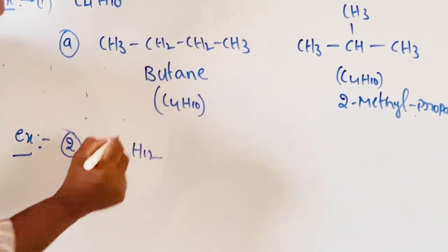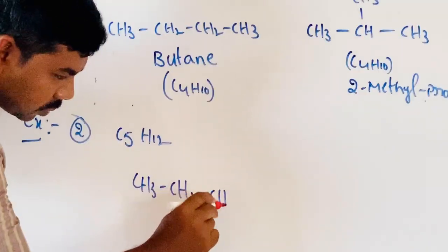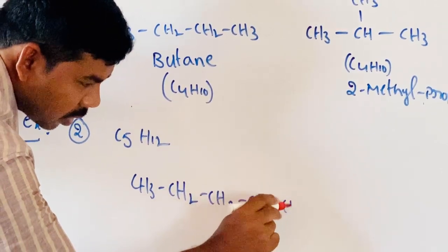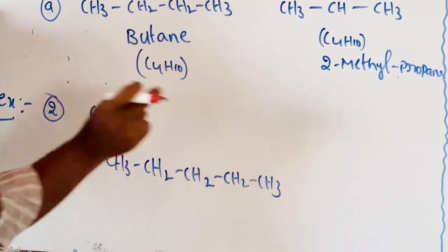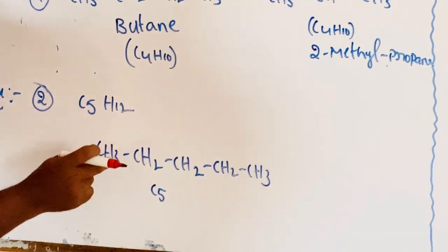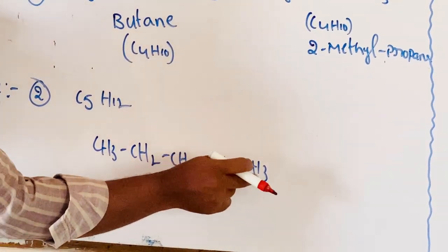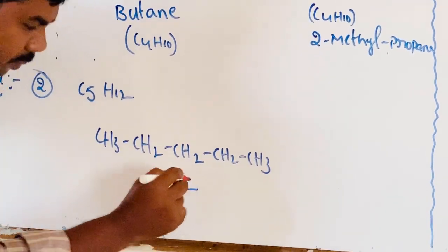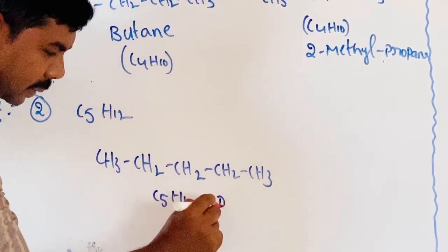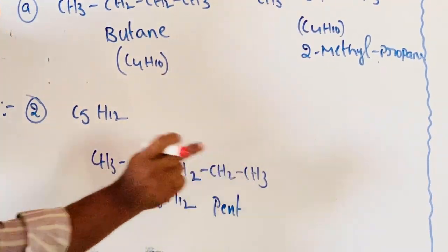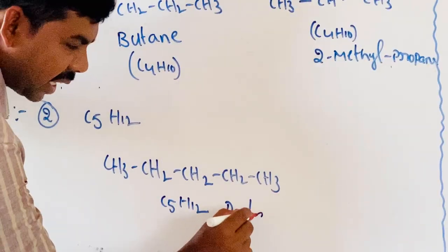Second example: C5H12. First structure: CH3-CH2-CH2-CH2-CH3, which has 5 carbons and 12 hydrogens — C5H12. Carbon-carbon single bond, suffix -ane, so the name is pentane.